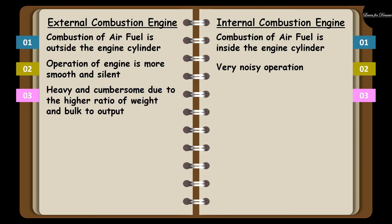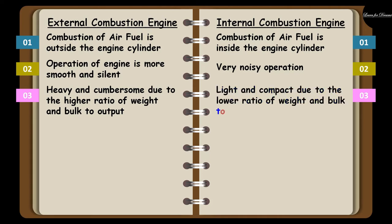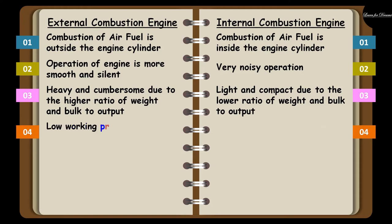The third difference is that the external combustion engine is heavy due to the higher ratio of weight and bulk to output power, whereas the internal combustion engine is light and compact due to the lower ratio of weight and bulk to output power. That means the external combustion engine is much heavier in weight compared to internal combustion engine.